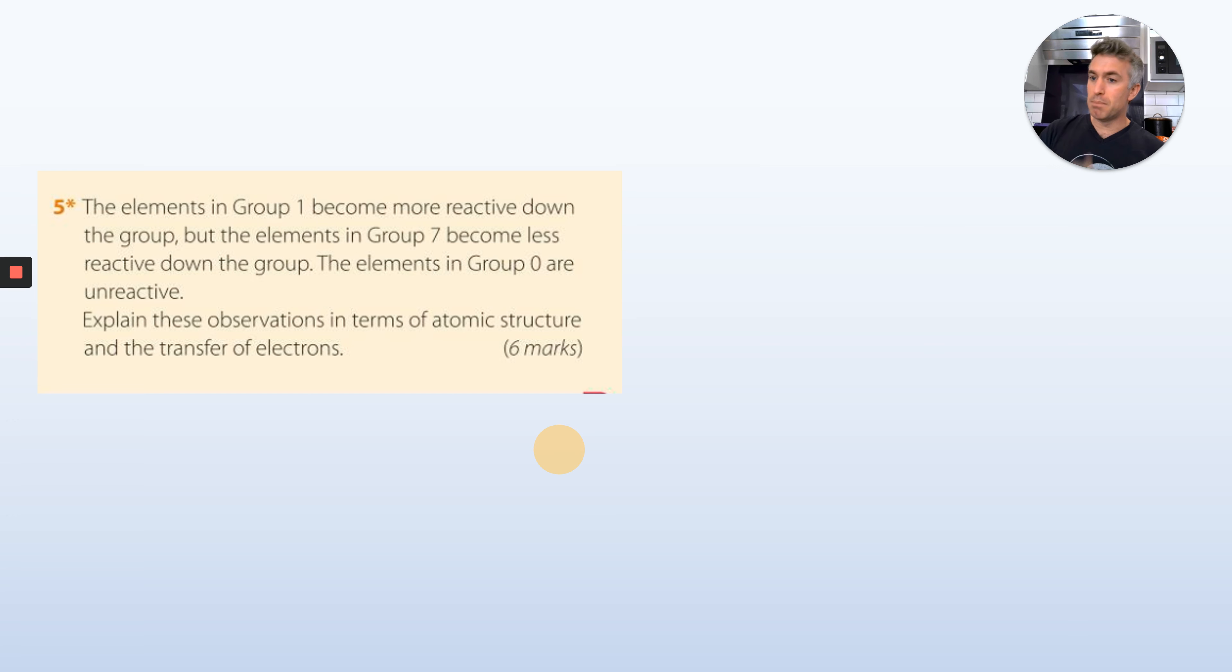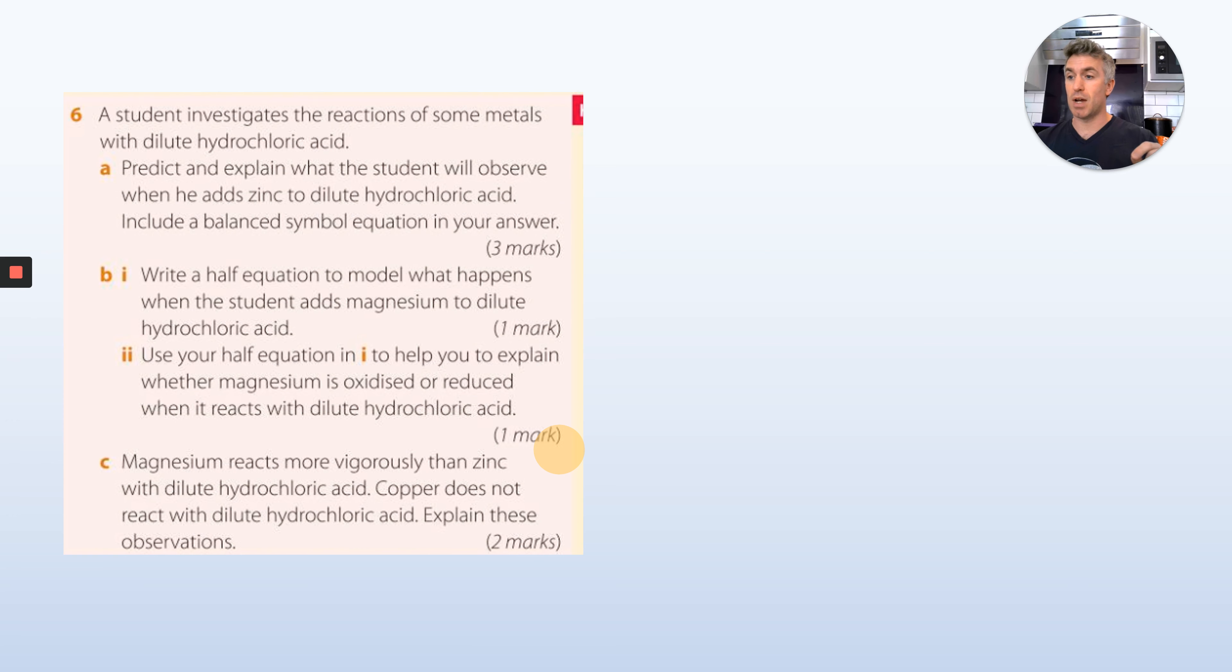Elements in Group 1 become more reactive down the group, but elements in Group 7 become less reactive down the group. The elements in Group 0 are unreactive. Explain these observations in terms of electronic structure. This is a great type of exam question. If you could do this question, you're going to be in a really strong place for when the exams happen for you next year. They will happen next year. So six marks. Describe their electronic structure, how it makes them more reactive and less reactive.